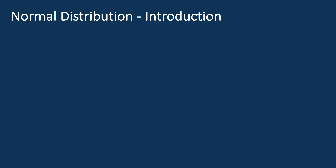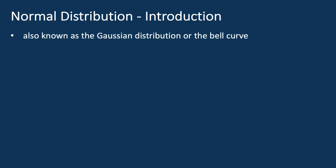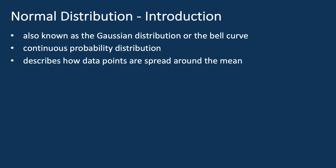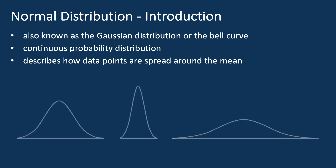The normal distribution, also known as the Gaussian distribution or the bell curve, is a continuous probability distribution that describes how data points are spread around the mean. It has a distinctive bell shape that is symmetrical, with fewer data points further away from the mean.